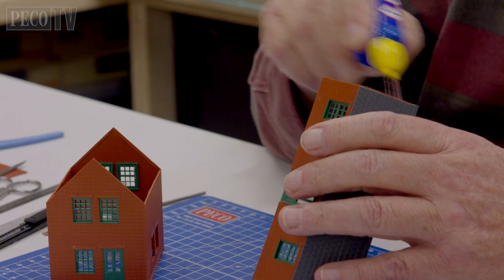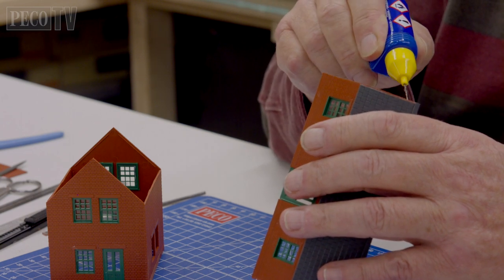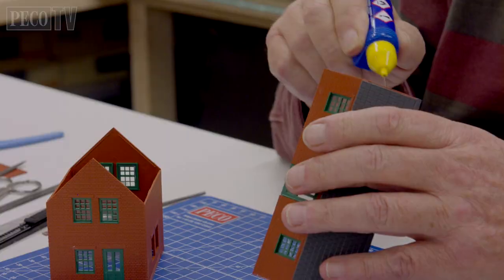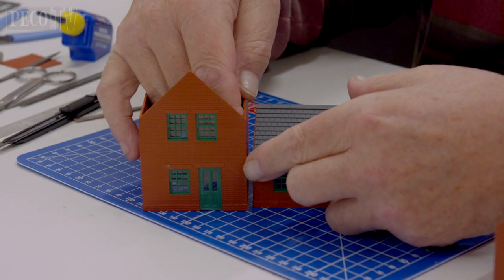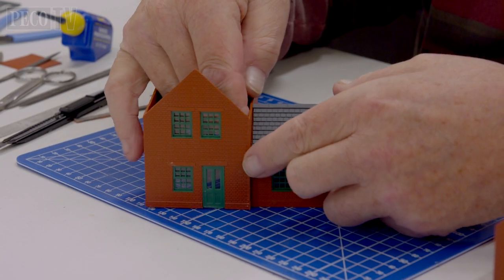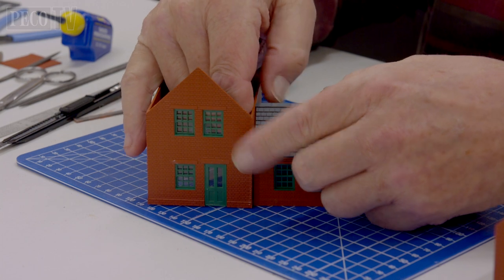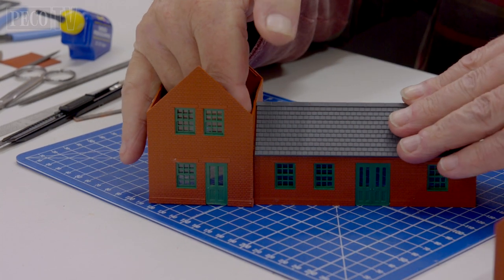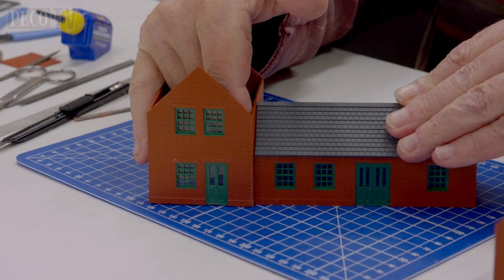Then apply glue to the station building ends to attach them to the station house buildings as shown here. Take care and patience when doing this as you want your building to sit level. And then repeat with the other end.